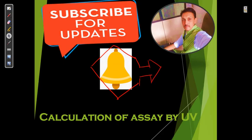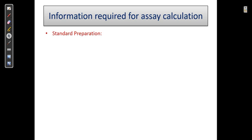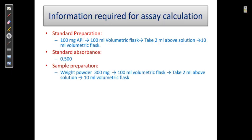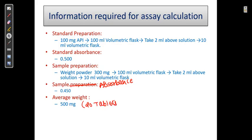Let us go into discussion about the calculations. What are the informations required? We require standard preparation, standard absorbance, sample preparation, and sample absorbance. Then we require average weight, which we take from 20 tablets weighed individually on a weight balance. We have a label claim of 150 milligram and standard potency of 99.85 percentage obtained from the certificate of analysis.